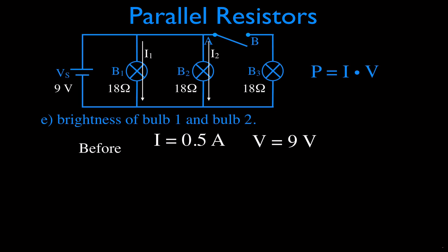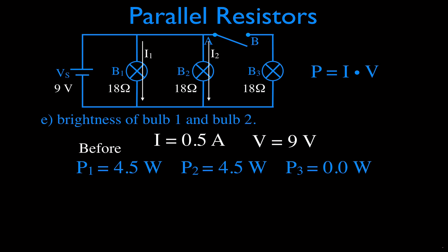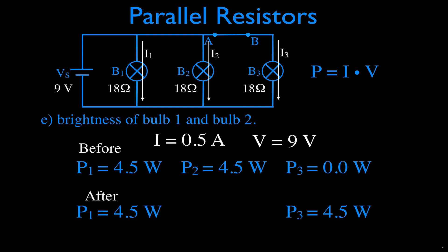The brightness of each bulb is directly related to power output, calculated as current times voltage. Before closing the switch, the power for bulbs one and two was 0.5 times 9 equals 4.5 watts each. Bulb three had zero power since no current was flowing. After closing the switch, bulb three now has power, but the current and voltages for the other branches didn't change, so the other two bulbs have the same brightness.